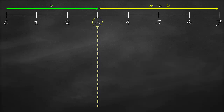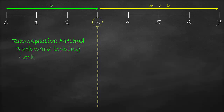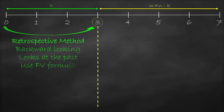The first method is the retrospective method, which is a backward looking approach. This means that we check the numbers of paid installments. Then we need to bring them to the year of analysis in which we want to calculate the loan outstanding, which is year 3 in our example. Therefore, we use the future value formula.